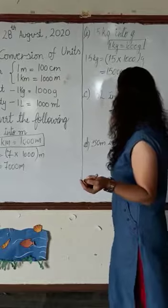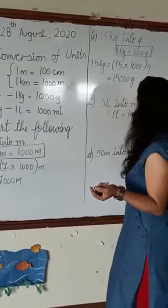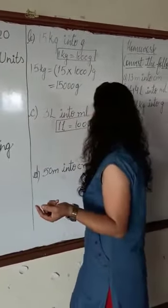First of all, we will write 1 liter is equal to 1000 milliliters. This is important, so we will write it in a box.